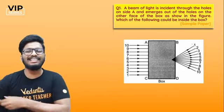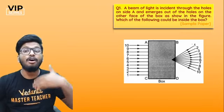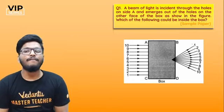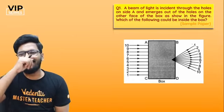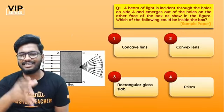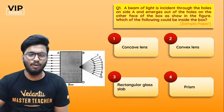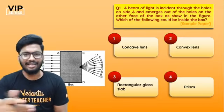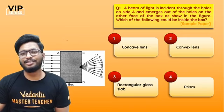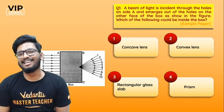Here's the first question. A beam of light is incident through the holes of side A and emerges out of the hole of the other face of the box, as shown in the figure. Which of the following could be inside the box? Is it a concave lens, a convex lens, a rectangular glass slab, or a prism?